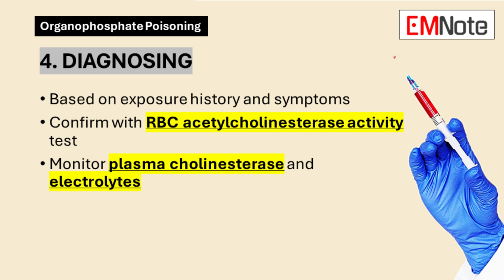Point number 4: Diagnosing Organophosphate Poisoning. Diagnosis primarily relies on the patient's history of exposure and presenting symptoms. However, you can confirm the diagnosis and assess severity using laboratory tests. Red blood cell acetylcholinesterase activity provides a definitive diagnosis and helps monitor therapy; significant clinical features manifest when levels fall below 25% of normal activity. Plasma cholinesterase activity acts as a sensitive marker for anticholinesterase exposure, with rapid decline and recovery over 4 to 6 weeks. Electrolytes and renal function monitoring is essential as poisoning can lead to metabolic acidosis and renal failure.